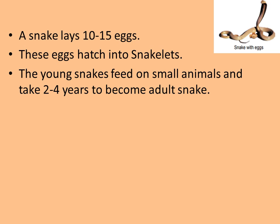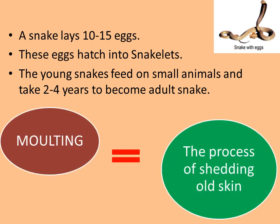A snake lays 10 to 15 eggs. These eggs hatch into snakelets, which are the small babies of the snake. The young snake feeds on small animals and takes 2 to 4 years to become an adult snake. While becoming the adult snake, the process of molting also occurs — that is the process of shedding old skin. The young snake loses or sheds its skin many times and develops a new skin. This process is called molting.